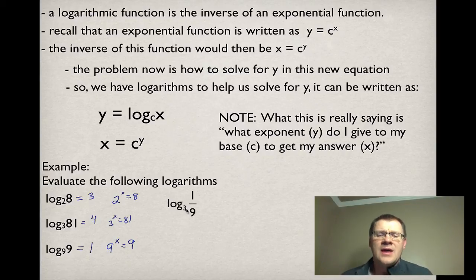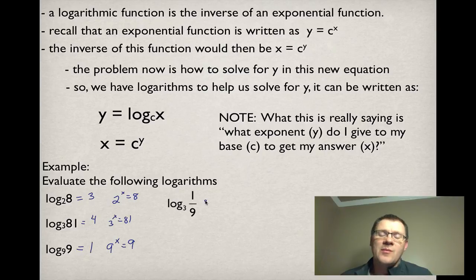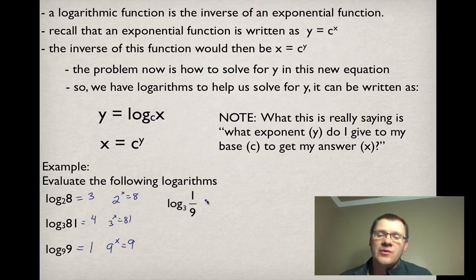A few more examples. What exponent do I give 3 to get an answer of 1/9? We can give bases negative exponents, so the answer is negative 2, because 3 to the power of negative 2 is equal to 1/9.